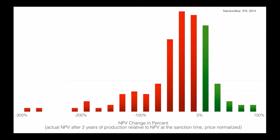What we're looking at here is the change in net present value, and the change is between the time the project was approved — the final investment decision estimate — and two years later. As you will see here on the horizontal axis, this has been price normalized, so commodity prices, oil and gas prices, are not impacting us. If there is no change in the calculated net present value over this two-year period, then the bars will show up at 0% on this graph. The green bars are on the good side, where the change is positive, and the red bars are on the negative side.